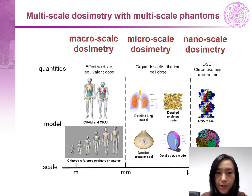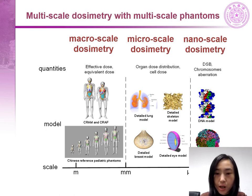There are totally three categories. In the first category, we have the whole body phantoms, which enabled us to calculate the effective dose. In the second category, we have the detailed organ models, which enabled us not only to obtain the average organ dose, but also the dose distribution inside the organs. In the third category, we have the atomic DNA models, which enabled us to study radiation damage to DNA.